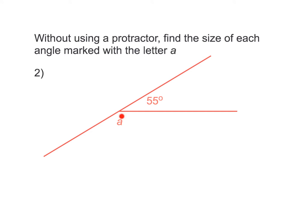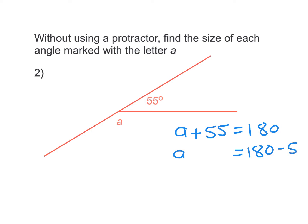Have a go at this one — find angle A. The first thing we need to recognize is that angle 55 and angle A are actually supplementary pairs of angles. As such, supplementary pairs of angles must equal 180 degrees. So we write: A plus 55 equals 180 degrees. Solving for A: A equals 180 minus 55, and our answer is 125 degrees. Problem solved.